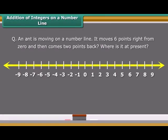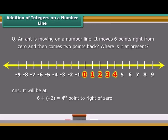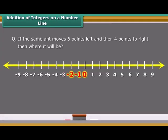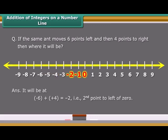An ant is moving on a number line. It moves six points right from 0 and then comes two points back. Where is it at present? It will be at 6 plus minus 2, which is equal to the fourth point to the right of 0. If the same ant moves six points left and then four points to the right, then where will it be? It will be at minus 6 plus within bracket plus 4, equals minus 2. That is, second point to left of 0.